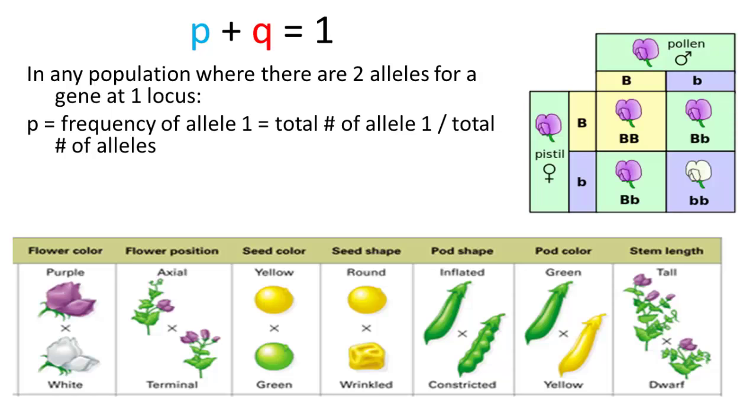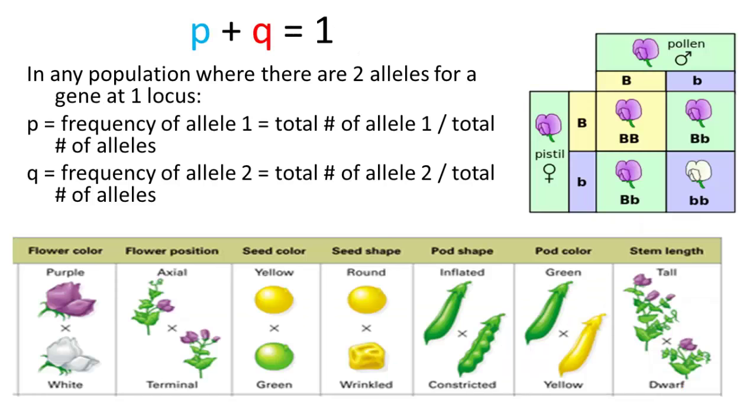p is the frequency of allele 1. To determine that, you take the total number of alleles and the total number of that first allele and figure out the proportion. And then q would be the second allele—take the number of those alleles in the population divided by the total number of alleles. We remember alleles from genetics, where you're looking at generally a capital letter and lowercase letter representing the dominant recessive genotype.